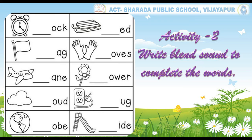For example, can you identify this picture? Yes, you are right. It is clock. Then, which blend sound is missing here? Correct. That is CL. Then, write the CL blend to complete this word. Okay children, in the same way, you have to complete the remaining ones.